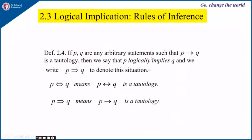If P and Q are any arbitrary statements such that P implies Q is a tautology, then we say that P logically implies Q, written with a double-lined arrow. P if and only if Q being a tautology means P logically implies Q. If P and P implies Q is a tautology, we say that P implies Q.